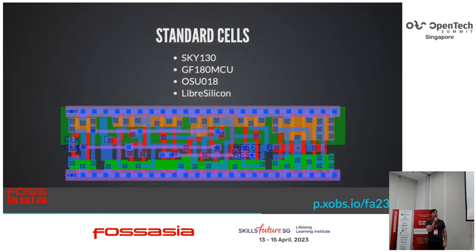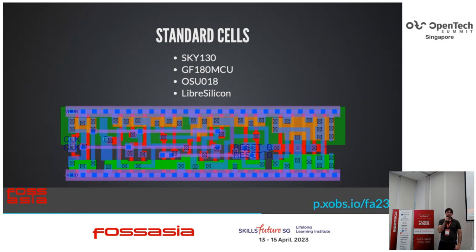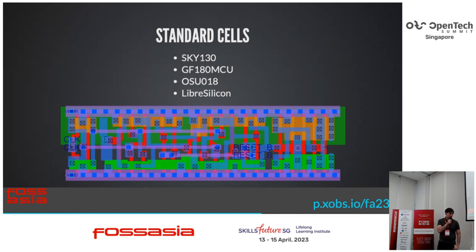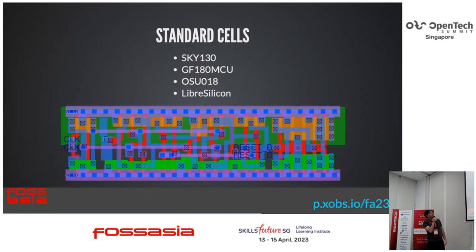For standard cells, we have a few different flavors: Sky130 from Skywater, GF180, OSU018 from Oklahoma State University, and LibreSilicon from Hong Kong. The interesting thing is you can use these standard cells with other process design kits — we've actually had OSU and LibreSilicon taped out in Global Foundries.